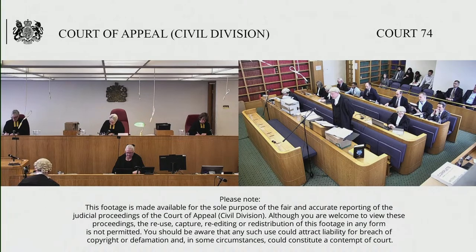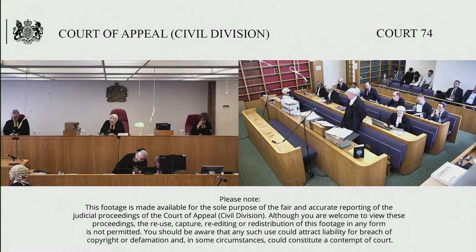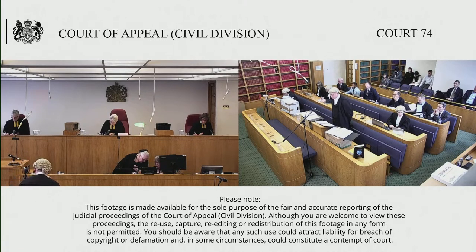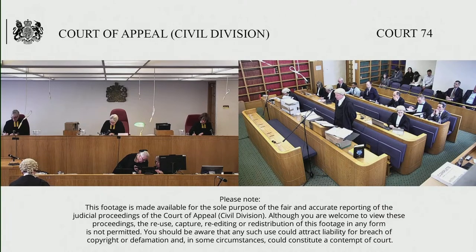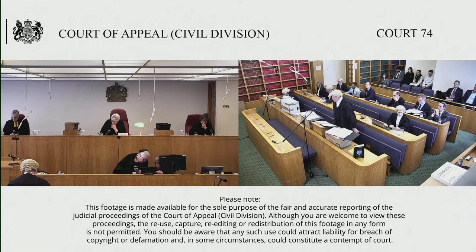That is, payments of that particular character being payments for use of the immovable property. And 6.2, the fifth limb, does not extend to payments for the transfer or alienation of the right to work. We say that by reference to six features of the landscape.